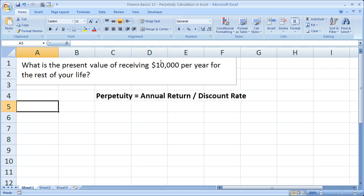So a very common example of this is to try and figure out the present value of receiving $10,000 per year for the rest of your life. So the perpetuity is the $10,000 per year for the rest of your life, so forever for you basically.